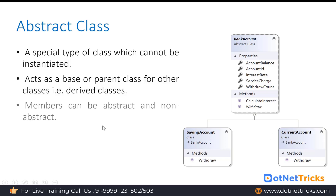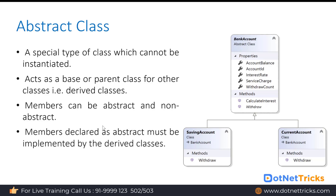We create an abstract class whenever we want to create both abstract and non-abstract methods. The methods declared as abstract in the abstract class are mandated to be implemented in the derived class. So in the saving account and in the current account, we are implementing the withdraw method which is part of the bank account abstract class.